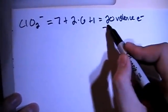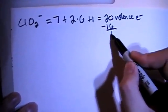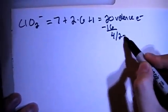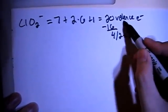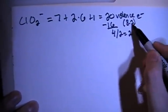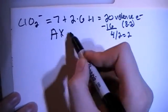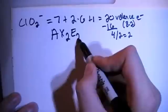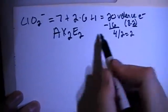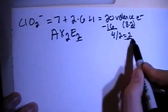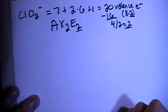And we can subtract the largest multiple of 8, gives us a remainder of 4, divide that by 2, gives you 2, and 16 is 8 times 2. So that means that this is going to be an AX2E2, where the X2 comes from this 2, and the E2 is this 2, alright? So we can go ahead and start to draw this structure.